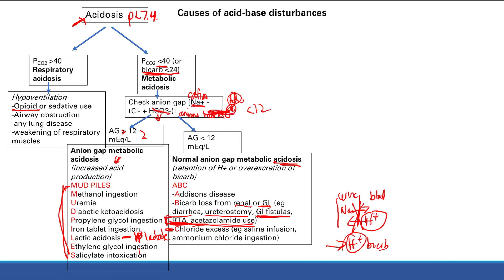Finally, chloride excess — for example, too much chloride from saline (NaCl) or ammonium chloride ingestion. What happens is chloride in the gut gets absorbed, and in exchange — remember, we always talk about charge balance — we have to secrete bicarb. Bicarb goes into the gut and goes to the feces. So now you're losing bicarb that way. Those are our ABCs of the non-anion gap metabolic acidosis: Addison's disease, Bicarb loss, and Chloride excess.